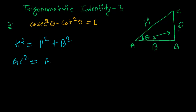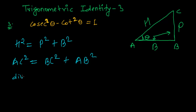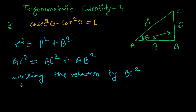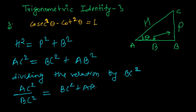Now what is the hypotenuse? That is AC. So AC squared equals BC squared plus AB squared. Now let's divide this whole relation by the perpendicular BC squared. AC squared divided by BC squared equals BC squared plus AB squared divided by BC squared.